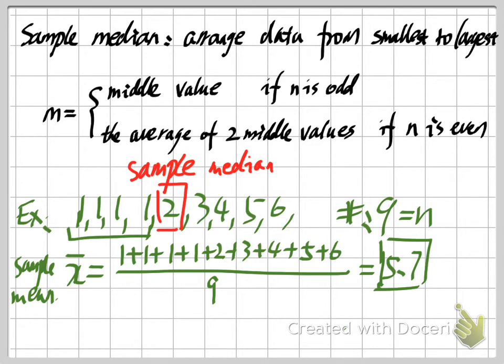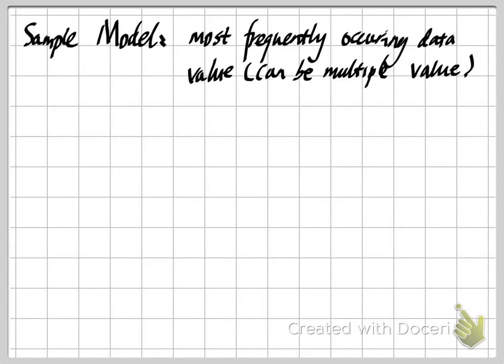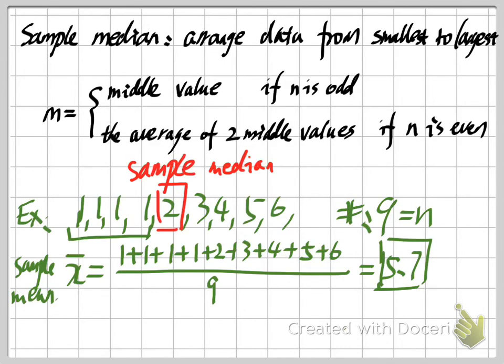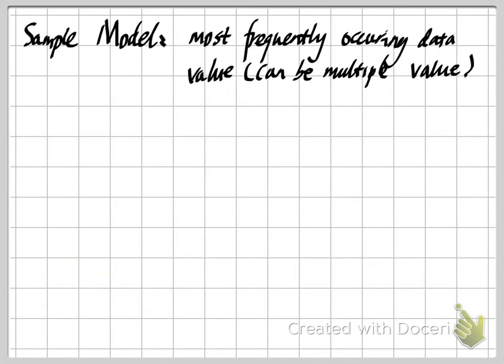The next terminology is the sample mode. The sample mode is the most frequently occurring data value in our data set or observations. Looking at our example, the number that occurs most frequently is number one. So the sample mode for this example is equal to one.